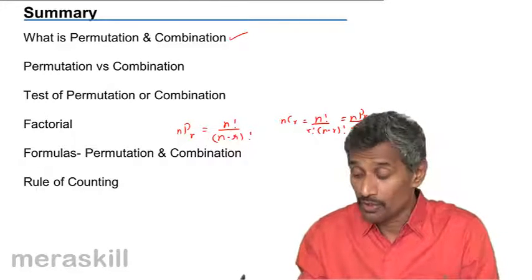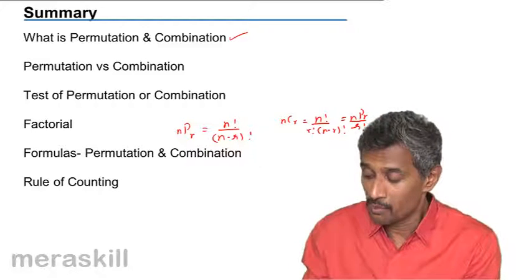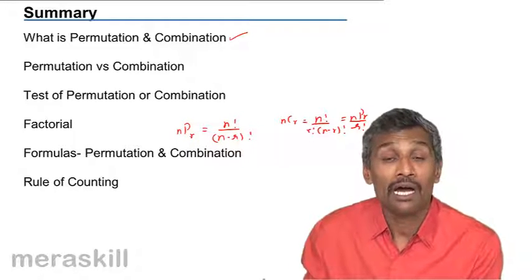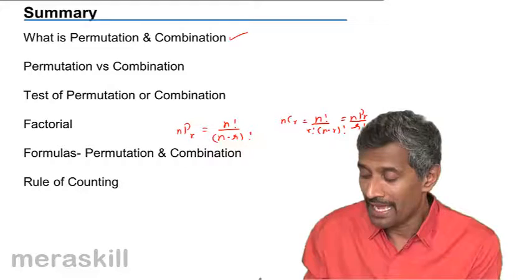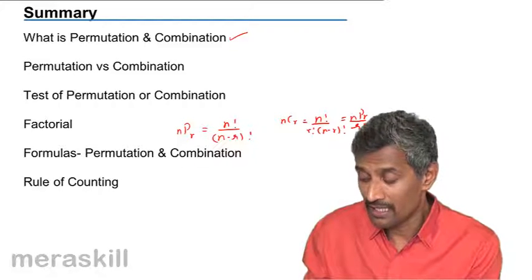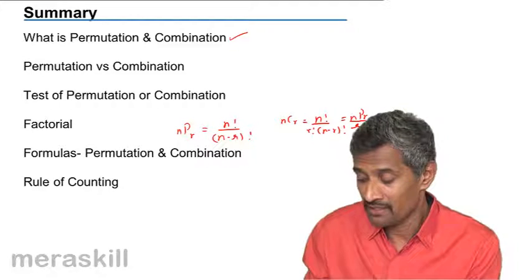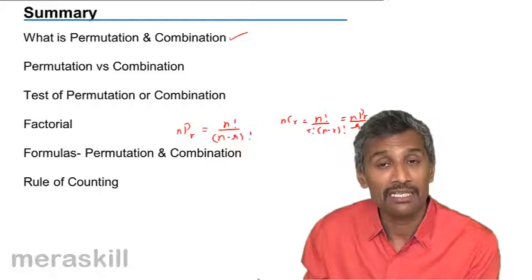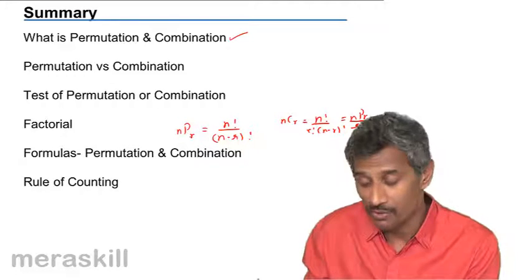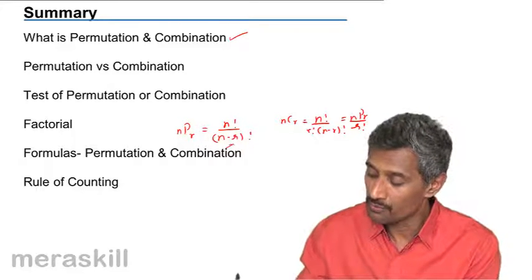And it is definitely important to remember that both n and r are positive integers and the value of r can never be greater than n. n's value is either greater than r or it is equal to r. So these two formulae we did.